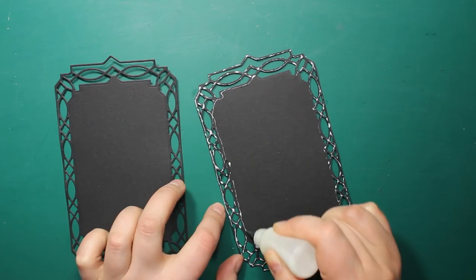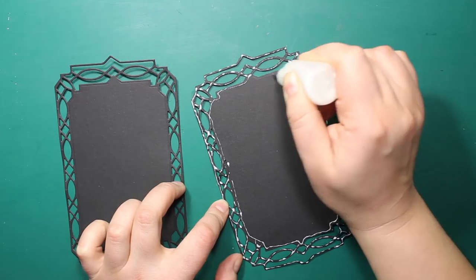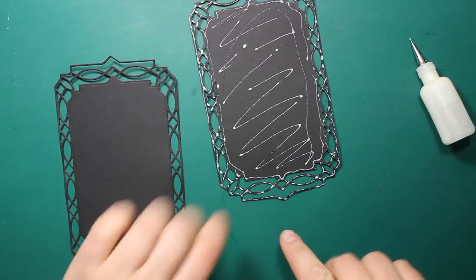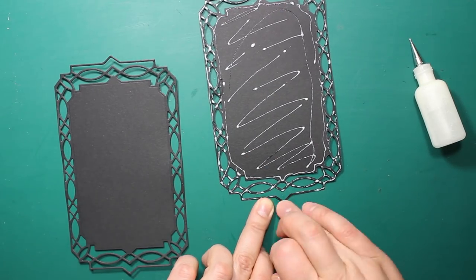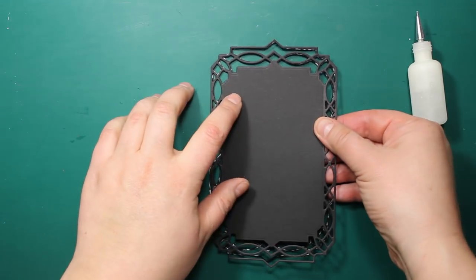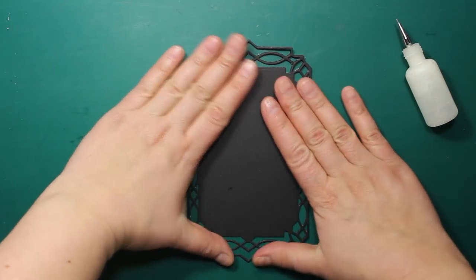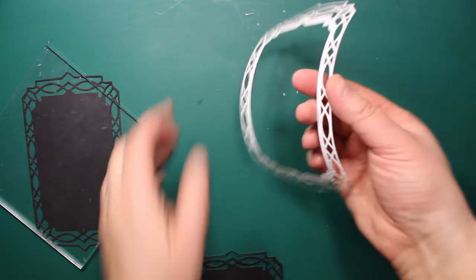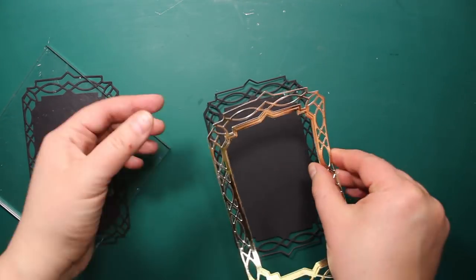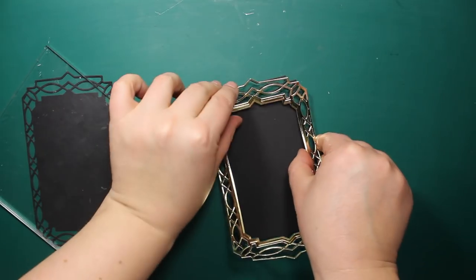Now to assemble the card base, I'm going to stick two black frames together for extra stiffness. I'm using a large acrylic block to hold the die cuts down while they're drying. Then I'm going to stick the open golden frame to the black one.